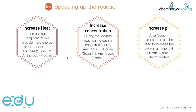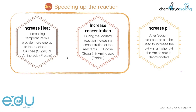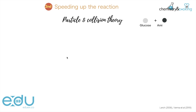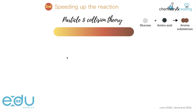So let's focus first on increasing heat and increasing concentration. Particle and collision theory is key here. Just to remind ourselves of the reaction: we have glucose represented by the grey particle, the amino acid represented as a black particle, and then the aroma substances — and there could be many different ones — represented by the brown particle.